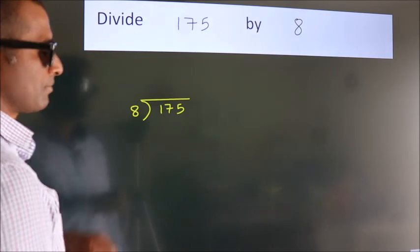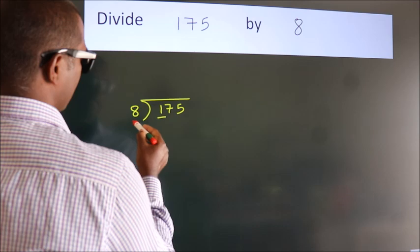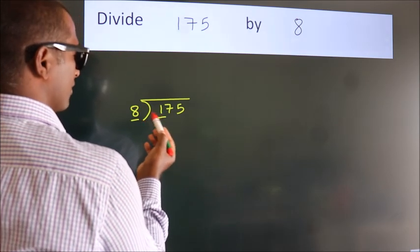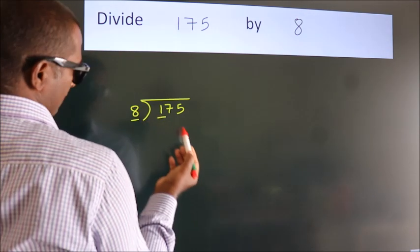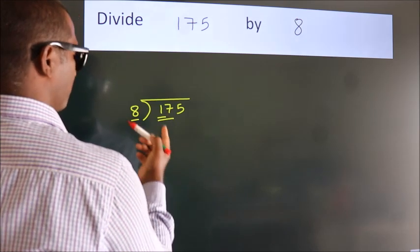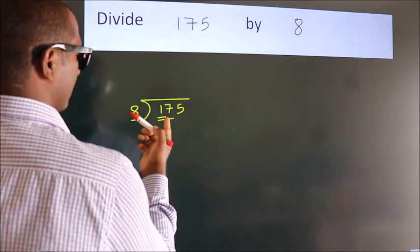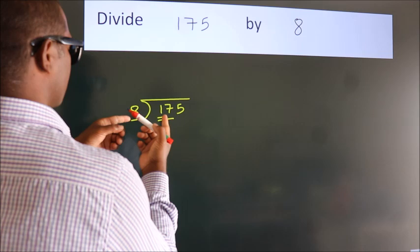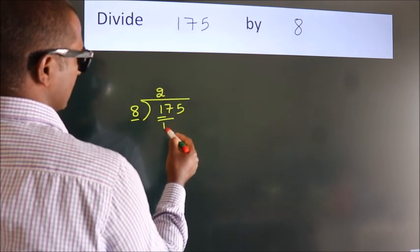Next, here we have 1, here 8. 1 is smaller than 8, so we should take two numbers, 17. A number close to 17 in the 8 table is 8 times 2 equals 16.